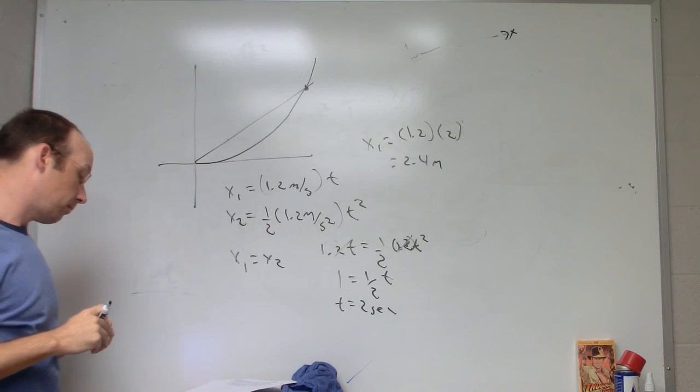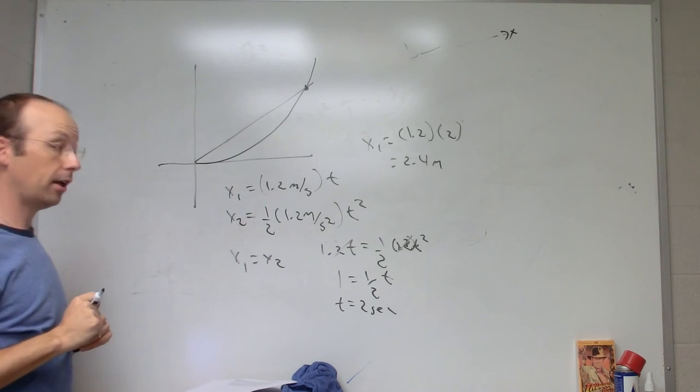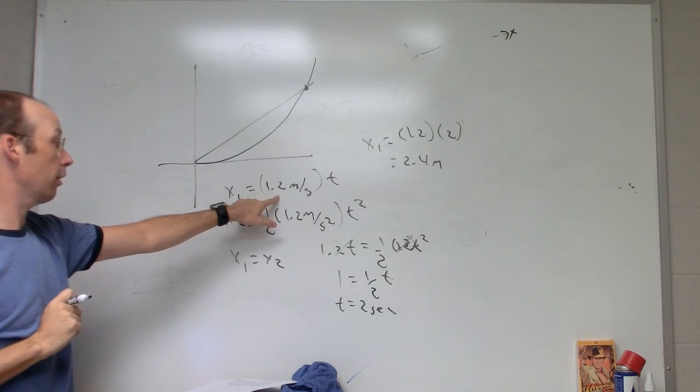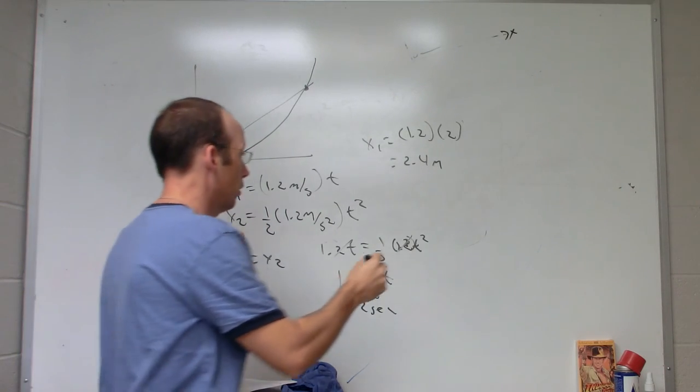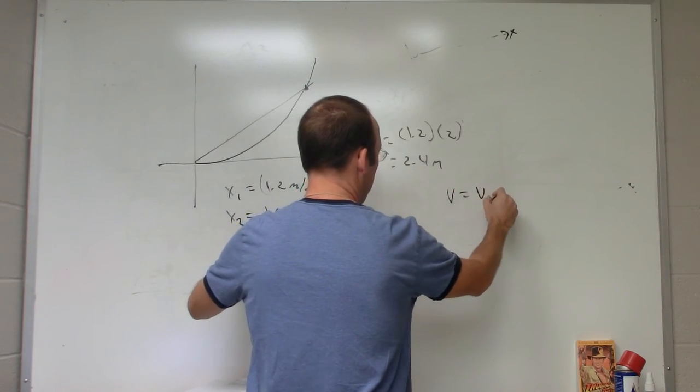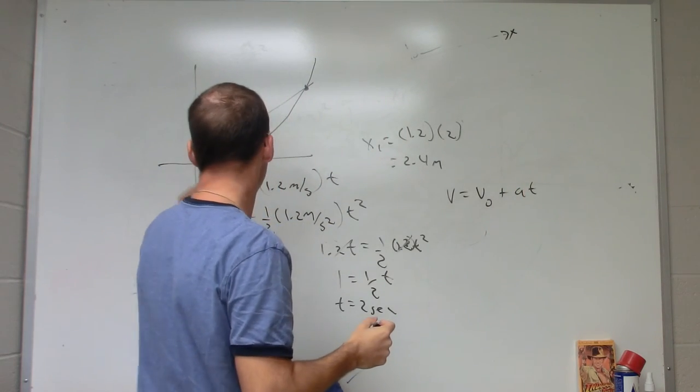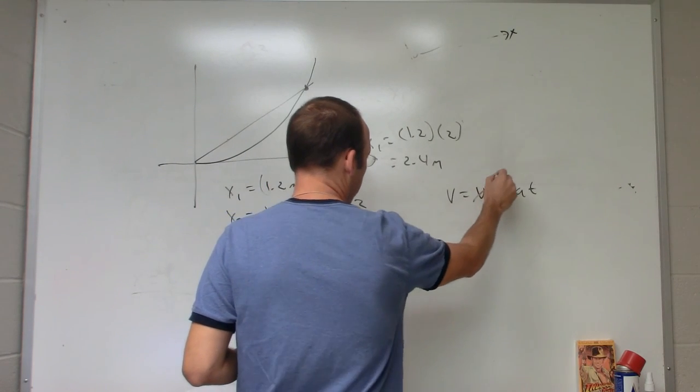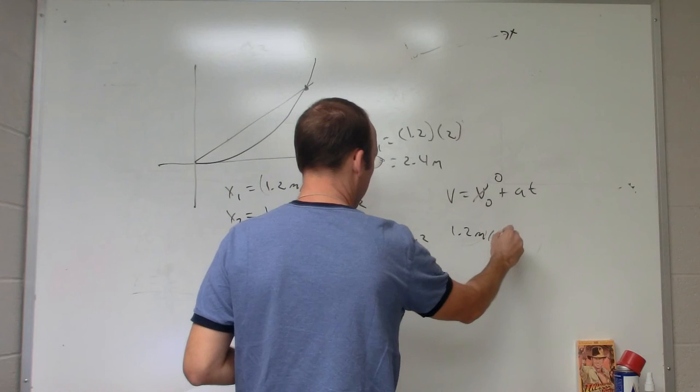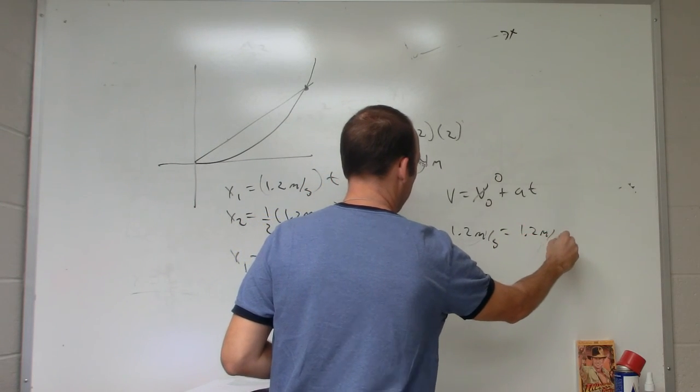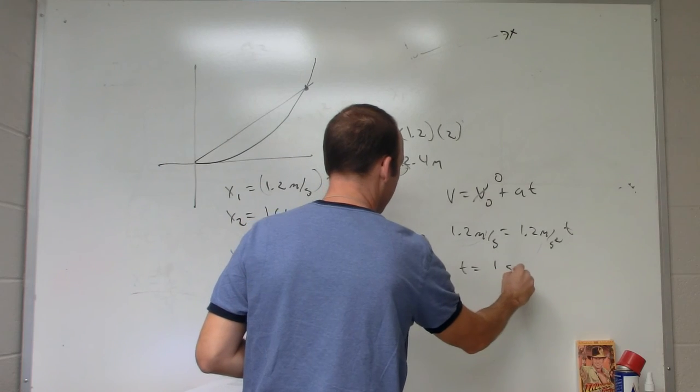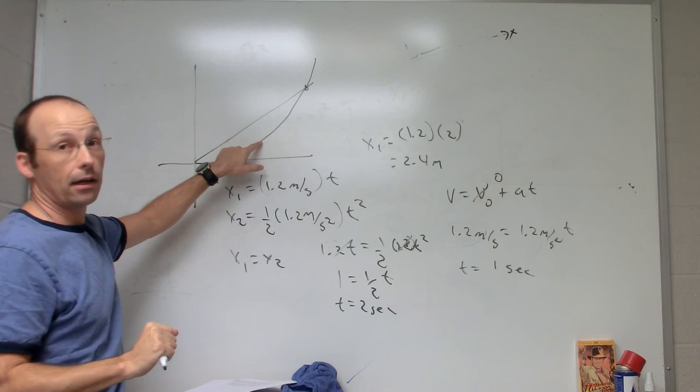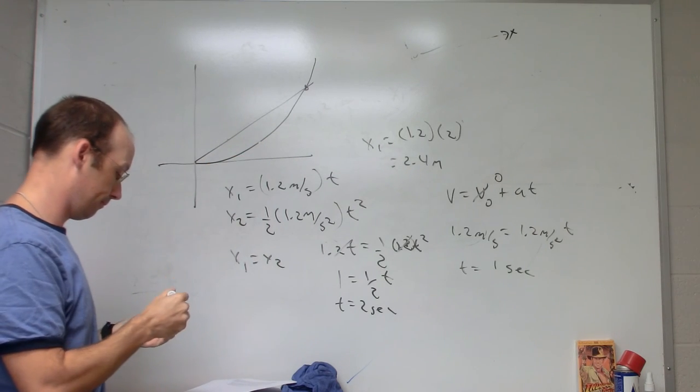What about this: calculate the time that the car has the same speed as the ball. Well, the speed of the car is constant. What about the speed of the ball? V equals v naught plus at. That's the expression for the speed. It starts at rest, zero, so this is 1.2 meters per second equals 1.2 meters per second squared times t. So t equals 1 second at the same speed. So here they don't have the same speed. They have the same speed down here. That's it.